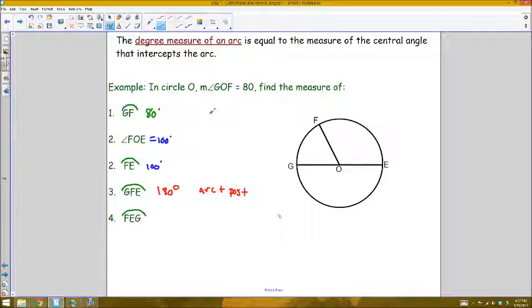Finally, I have arc FEG, the last arc here, that would be the arc starting at F and ending at G which passes through the point E along its journey. So it won't be that direct connection, it'll be the one that goes around the outside of the circle this way.